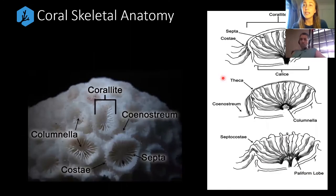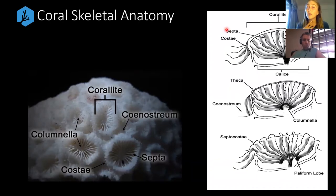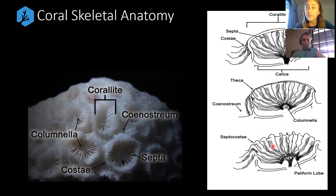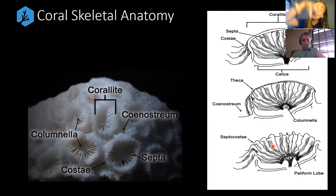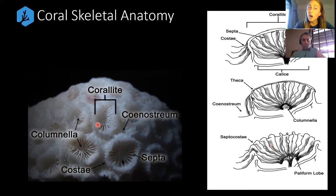Let's quickly go over coral skeletal anatomy, which many of you will have a basic understanding of if you've done any of our courses or have a general interest in corals. We have the coralite — you can think of it as the cup-like structure in the coral skeleton that the polyp, being the living animal, sits on top of. They're layering down calcium carbonate and thickening it up as they go. The coralite is where all the action is.